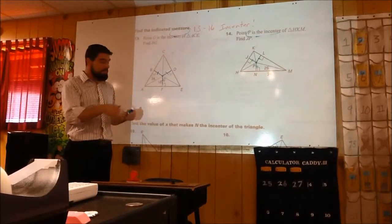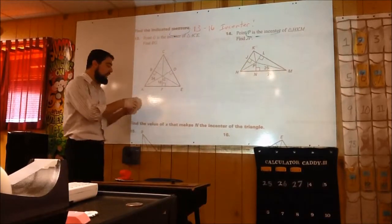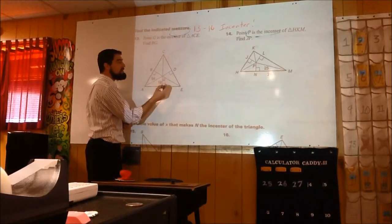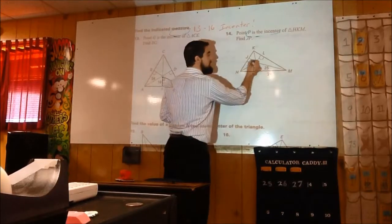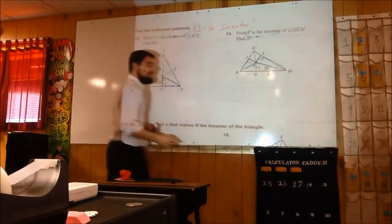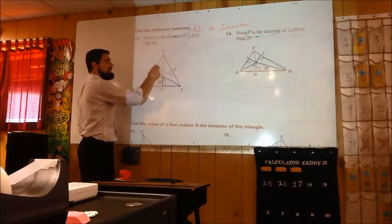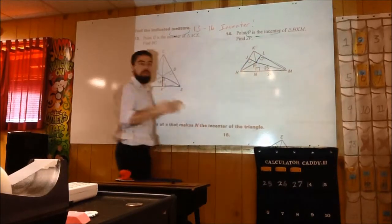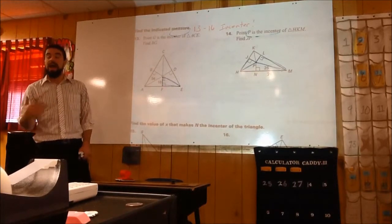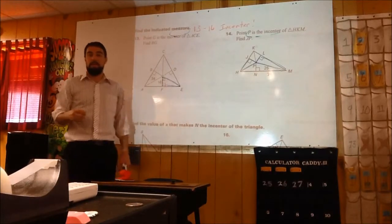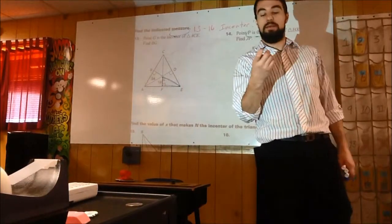For all of these problems, we're going to use the fact of what kind of triangles are being created in the big triangles with the in-center. They're all right triangles — every single one of these triangles. There are six of them in here and six in there. Every single one of those triangles is a right triangle. So if you're missing a side length of a right triangle, what theorem are we going to use? Pythagorean's theorem.